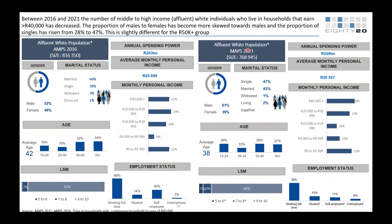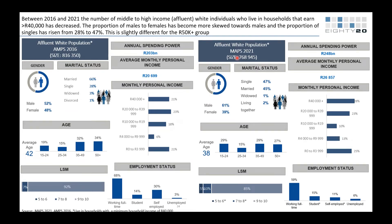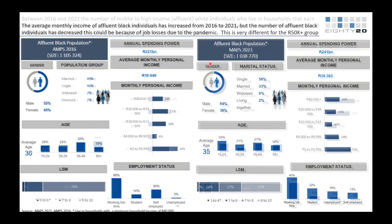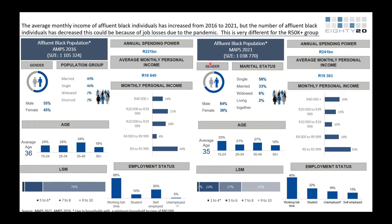You can see the drop in the affluent white population. The proportion of males to females has become more skewed towards males, and the proportion of singles has risen dramatically — from 28% to 47% — as people delay getting married and delay childbirth. Comparing to the Black affluent population — you must earn 40,000 rand a month to get into this income band — it's dropped slightly at that level but gone up a bit at 50,000 plus.